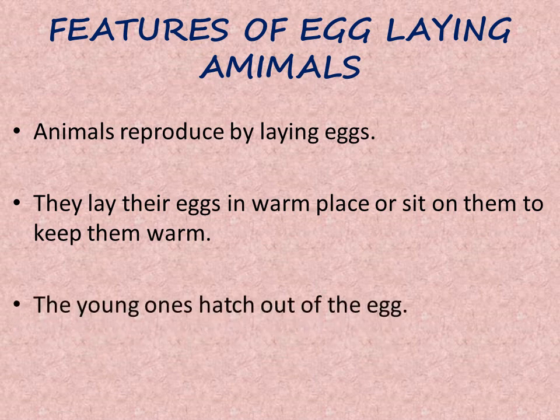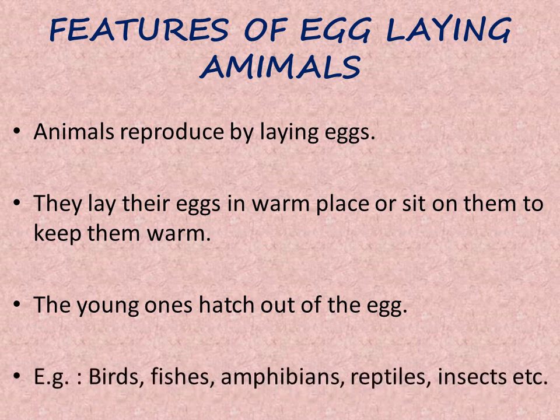This is called incubation. The young ones hatch out of the egg — hatching means the young one comes out by breaking the egg shell. Examples of egg-laying animals: birds, fishes, amphibians, reptiles, and insects.